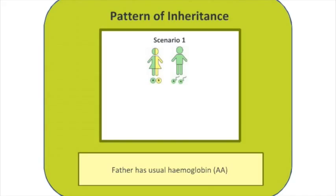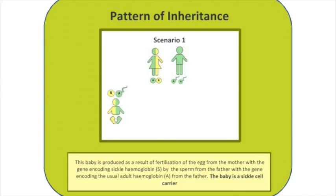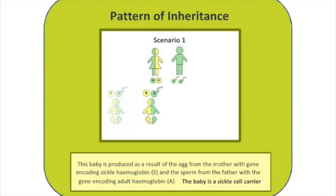So what are the possible outcomes should this couple have children? One outcome is that the baby inherits the S gene from the mother and of course only inherits a normal healthy A gene from the father. A second outcome, considering there are two healthy options from the father, results in an infant with the same genotype — inheriting the sickle cell gene from the mother and haemoglobin A from the father.